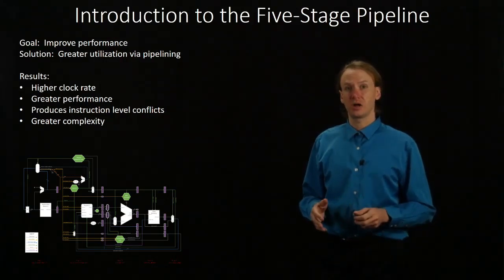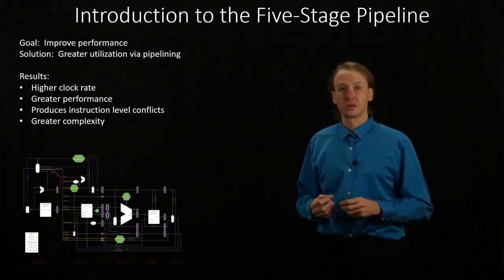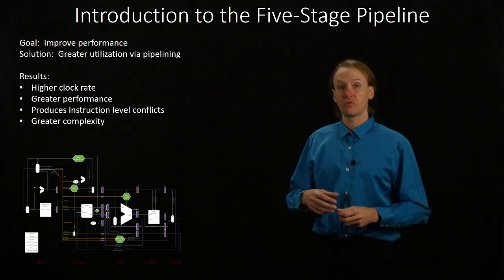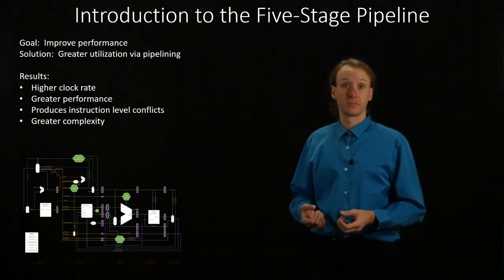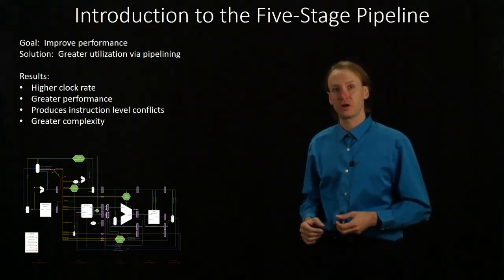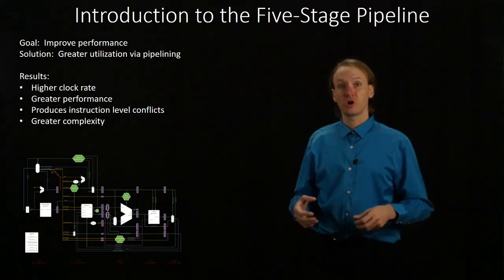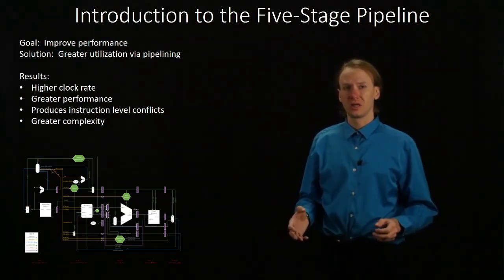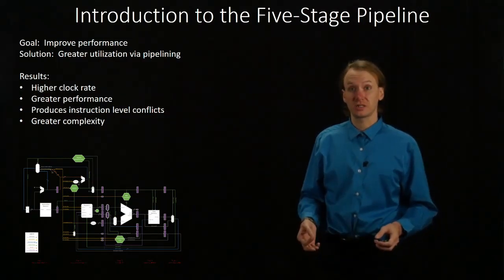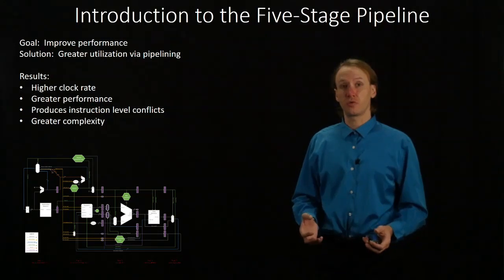The basic idea behind pipelining is that we're going to break our processor up into a series of smaller chunks. Each instruction will only need to occupy one chunk of our processor at a time, so that will free up the rest of the processor to run other instructions. This means that we'll actually be able to have five instructions running concurrently in our five-stage pipeline. One effect is that we'll get a higher clock rate — our processor will appear to run much faster than it did before, even if it's really just doing the same amount of computation. But we will actually get some greater performance out of this, because we'll have five instructions running concurrently.